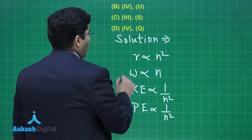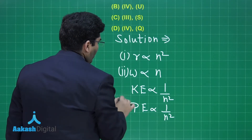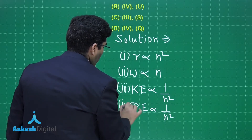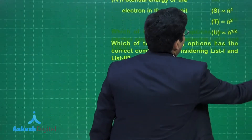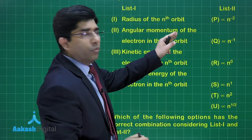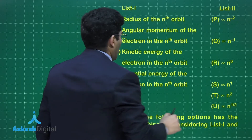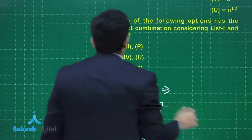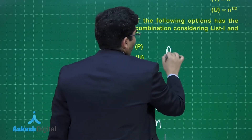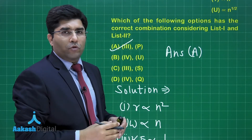So matching list 1 to list 2 — the first, second, third, and fourth items correspond accordingly. There is only one correct option, and that option is A. So A is our final answer.